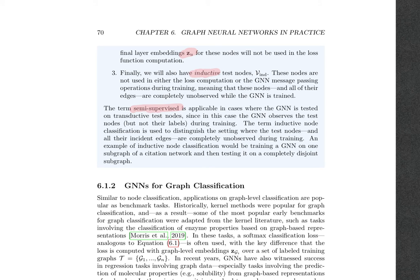The term semi-supervised is mostly applicable where the GNN is tested on transductive test nodes, because in this case it has looked at them and sort of seen them, but has not observed their labels. The term inductive node classification is for the case where the edges that help a node participate in message passing and training operations are completely unobserved during training — it's a completely independent scenario.